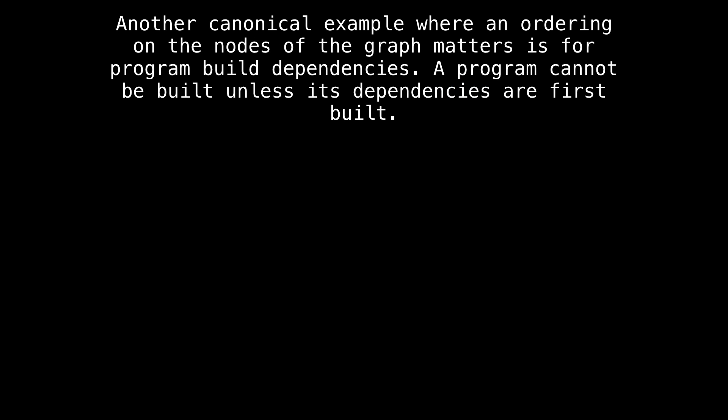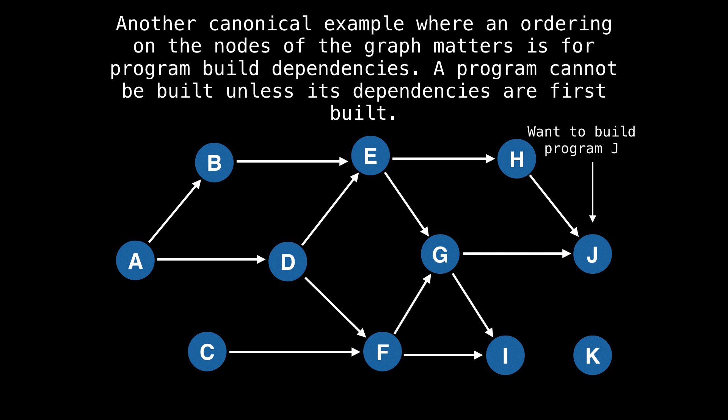Another canonical example of an application of top sort is for program build dependencies. A program cannot be built unless all its dependencies are first built. For example, consider this graph, where each node represents a program, and the edges represent that one program depends on another to run. Well, if we're trying to build program J on the right hand side, then we must first build program H and G. But to build those, we also need E and F. But to build those, we also need and so on. The idea is to first build the programs without dependencies and then move onwards from there. How do we find a valid ordering in which to build all the programs? Well, this is where top sort comes into play.